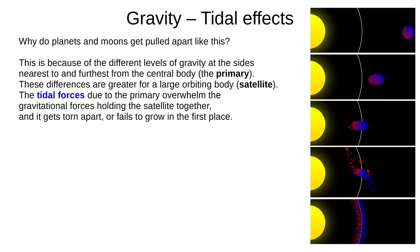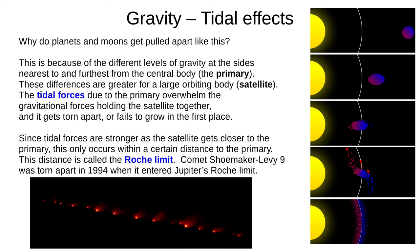But why does this destruction of moons happen? There are different levels of gravity at the sides nearest to and furthest from the central body, also called the primary. These differences are greater for a large orbiting body, also called the satellite. The tidal forces due to the primary overwhelm the gravitational forces holding the satellite together, and it gets torn apart, or just fails to form into a large body in the first place. The strength of tidal forces is related to the ratio of the size of the satellite to the satellite's orbital distance, so tidal forces are stronger close to the primary, and only prevent satellite formation within a certain distance called the Roche limit. You should know this name, but don't worry about the complex maths needed to calculate the distance.